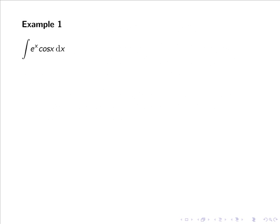Consider the example: the integral of eˣ cos(x) dx. Here we have the integral of two unrelated functions which we know how to integrate. As neither is a power function, we can choose either for u and we'll end up with the same answer. Here I'm going to choose u as cos(x) and dv as eˣ dx. So differentiating u we have that du/dx is equal to minus sin(x), and multiplying across by dx we have du equals minus sin(x) dx.